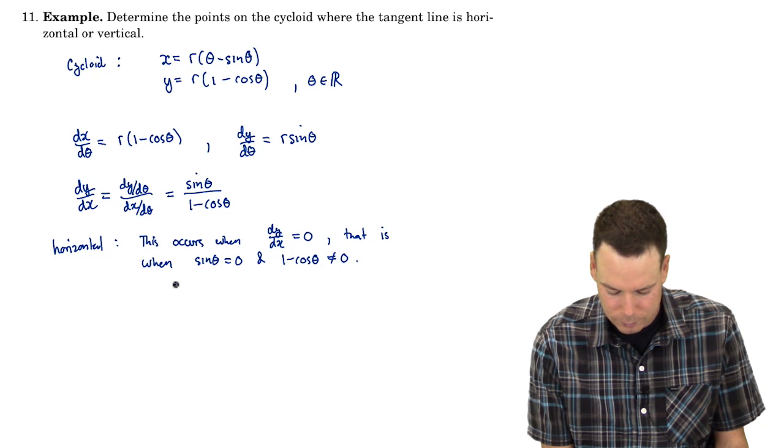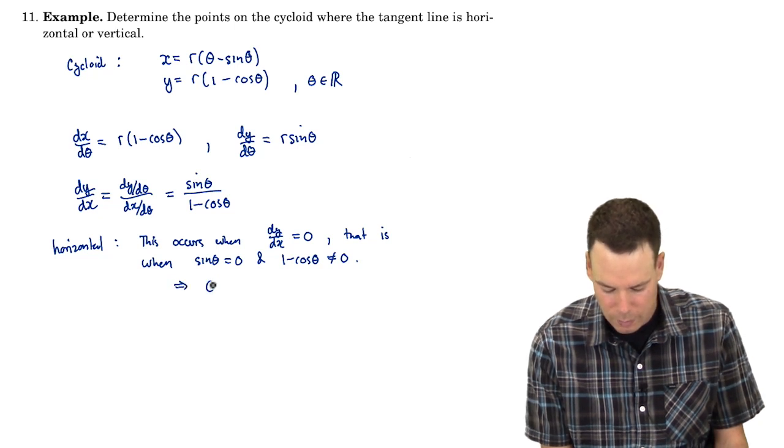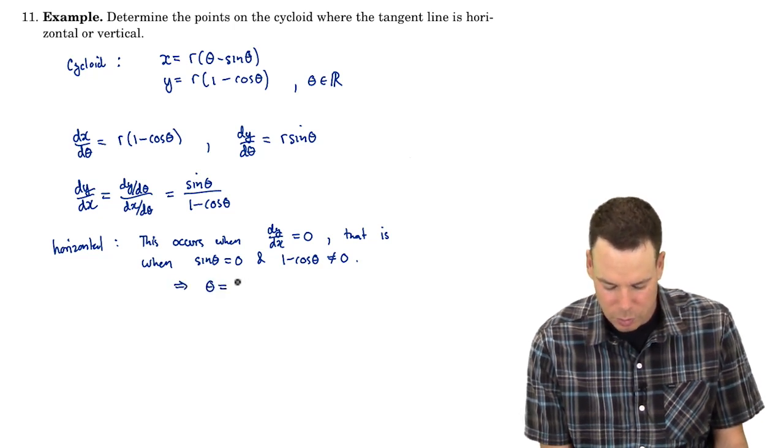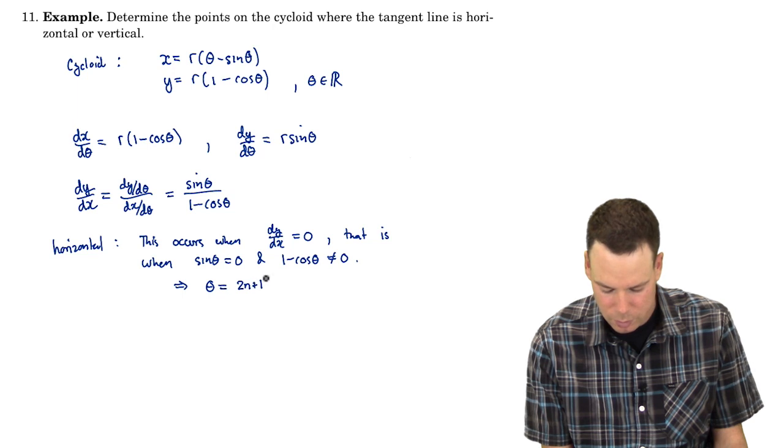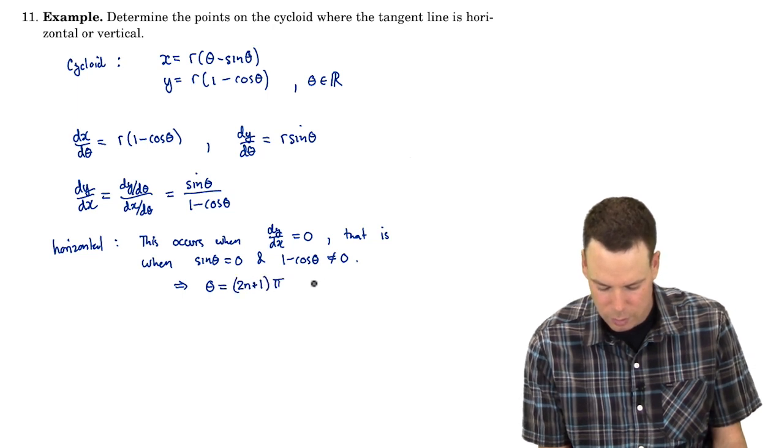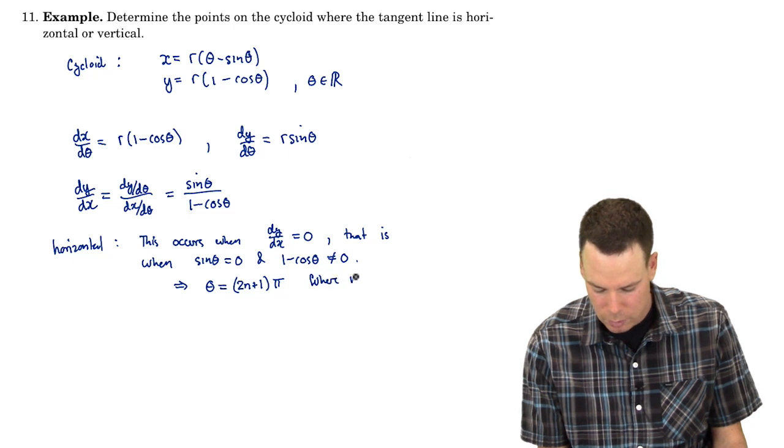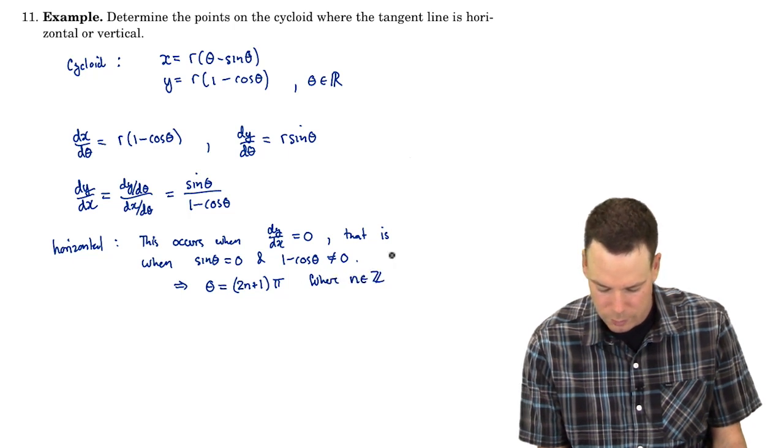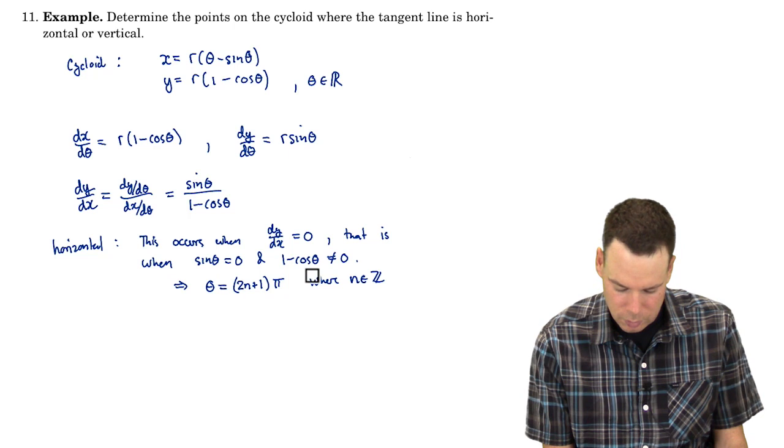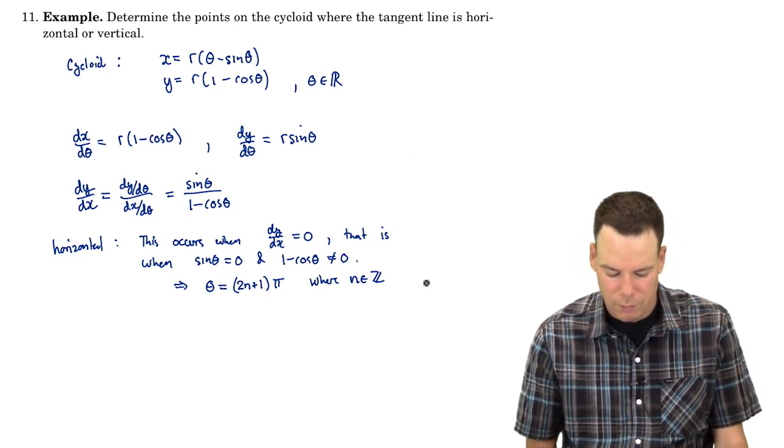So if sine theta is 0 then that means cos theta has to be negative 1. So that means that theta has to be an odd multiple of pi. So it's 2n plus 1 pi where n is an integer. Okay, so those are my theta values.